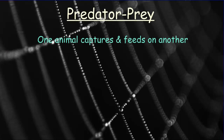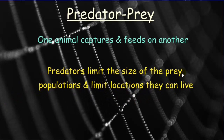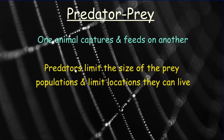The first interaction is the predator-prey relationship — one you're probably most aware of since we discuss it in elementary school. This is a relationship where one animal captures and feeds on another. The one doing the capturing is the predator; the one that gets eaten is the prey. Predators actually limit the size of the prey population, and this relationship also determines the locations where both predators and prey can live.